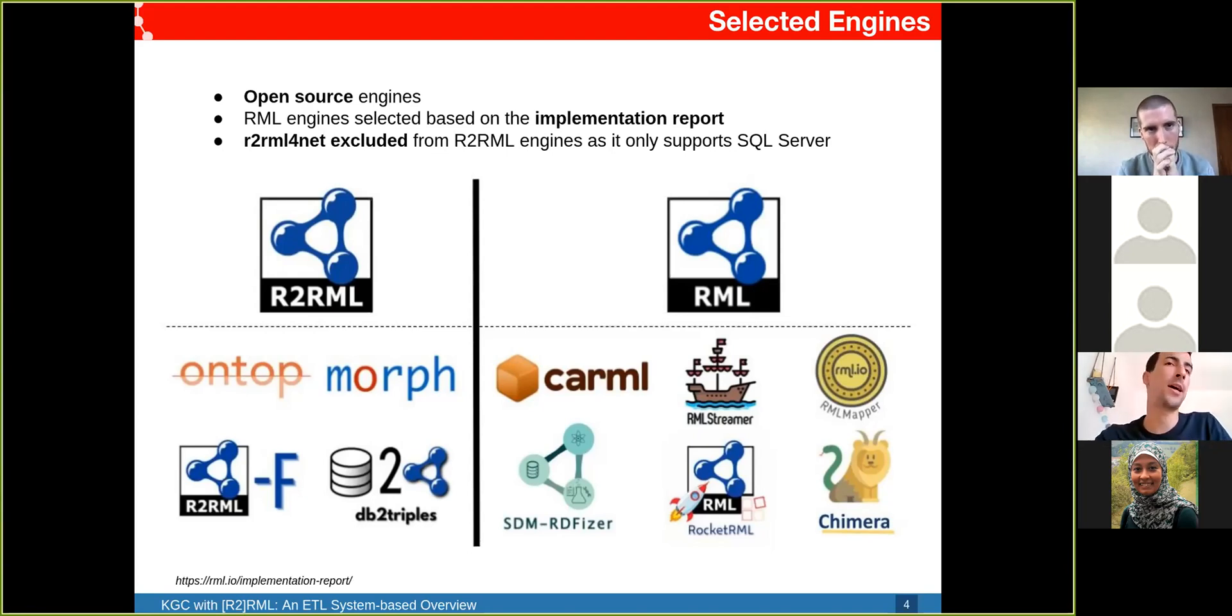We ended up with R2RML engines: OnTop, Morph-RDB, R2RML-F, and DB2Triples. For RML: Carmel, RML Streamer, RML Mapper, SDM-RDFizer, RocketRML, and Chimera.